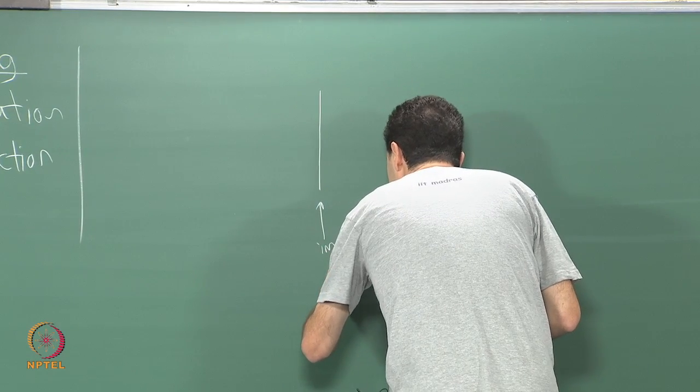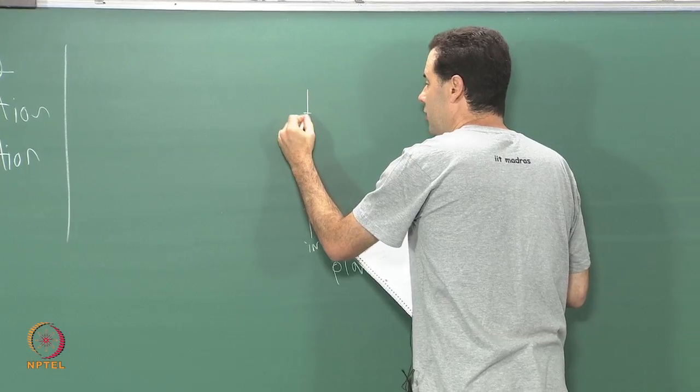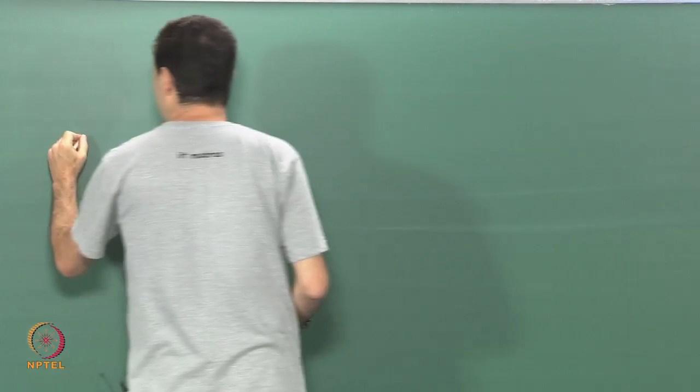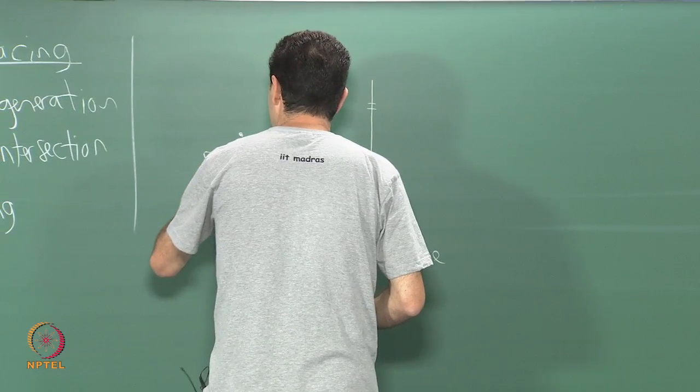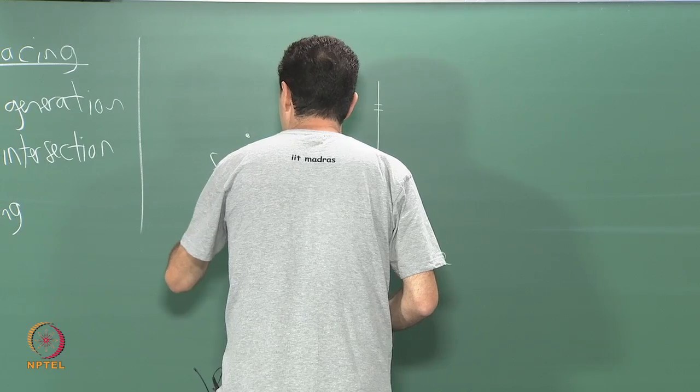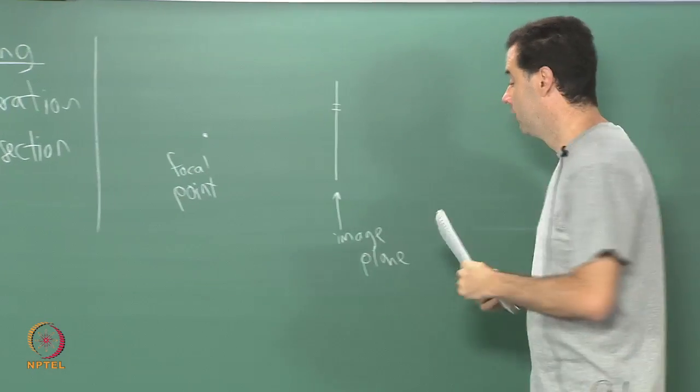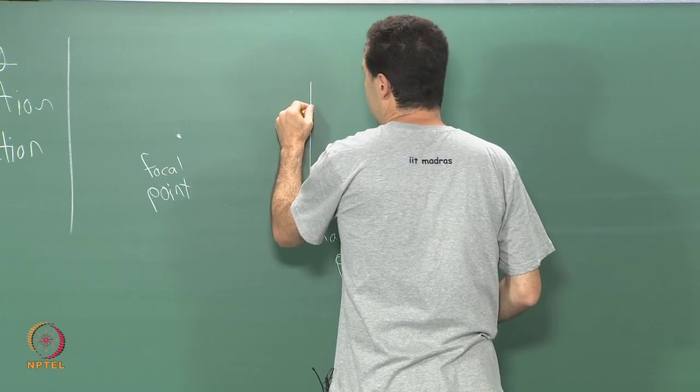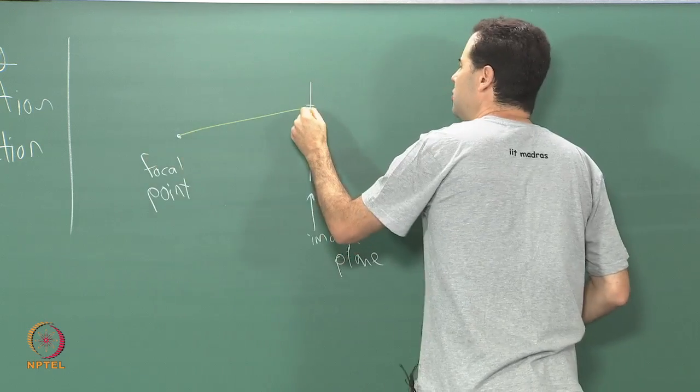I have the image plane here and I focus on one particular pixel. So say it just has one location like that. There is the focal point of the perspective projection transform.